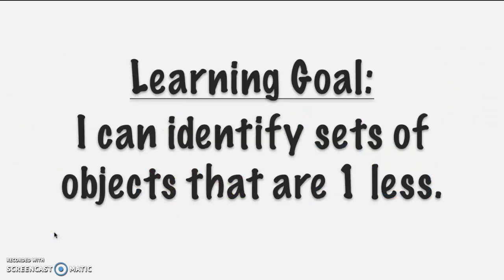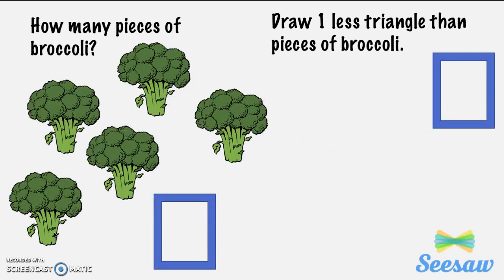Friends, you are rocking and rolling and doing such a good job with our learning goal. Our learning goal said: I can identify — and that just means find — sets of objects that are one less. And that's exactly what we've been working on. Now it's your turn. Go ahead and seesaw a video to your teacher. It says how many pieces of broccoli — you're going to need to count the pieces of broccoli — and then draw one less triangle than pieces of broccoli, and write how many you have. So we're comparing the broccoli and one less triangle. Send that on seesaw and good luck, friends. Bye, guys!